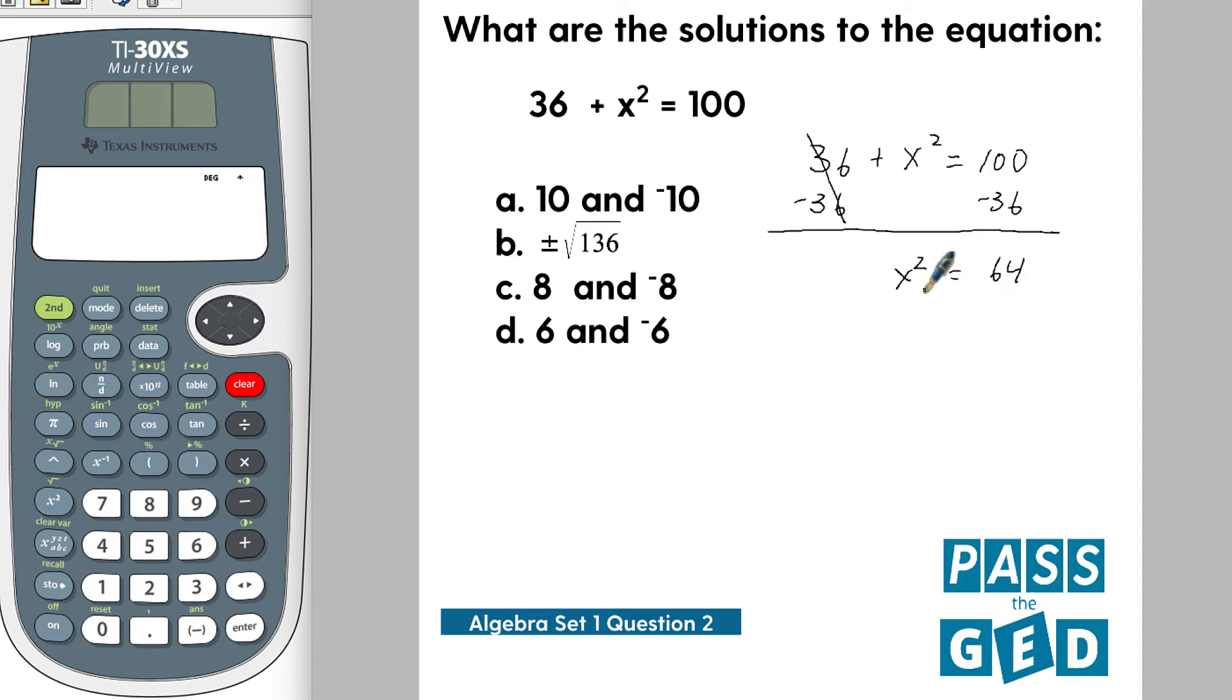If we want to solve for x, the inverse of squaring something is taking the square root of it. So x will be equal to the square root of 64.